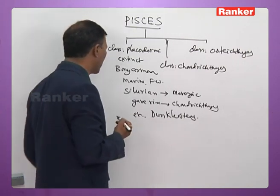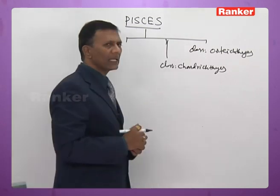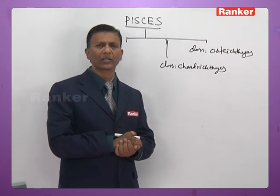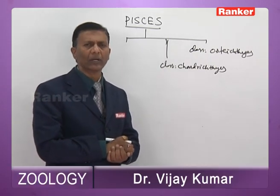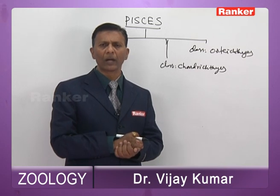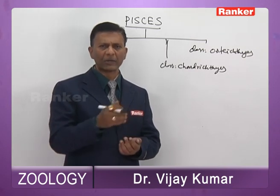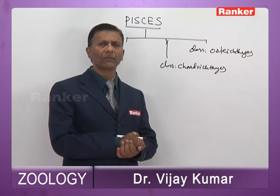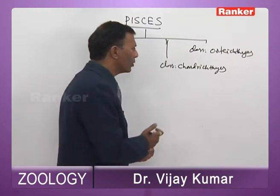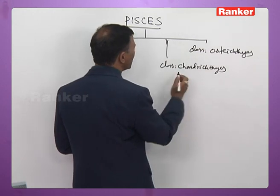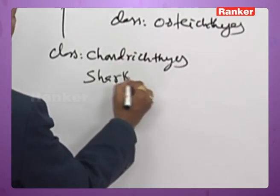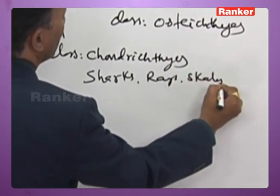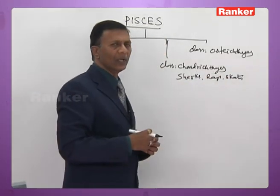Class Chondrichthyes includes cartilage fish. All of them are exclusively marine. It includes three groups of fish placed under this class: sharks, rays, and skates, based on morphological features.